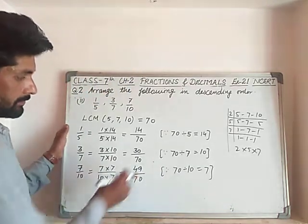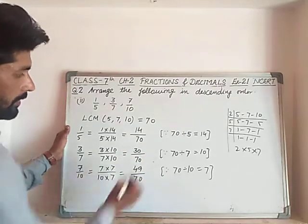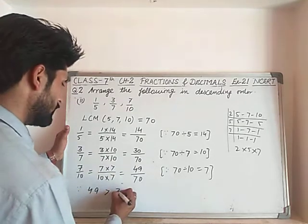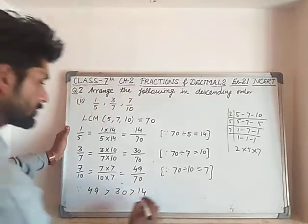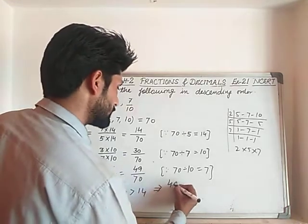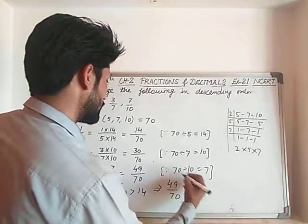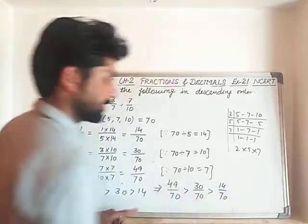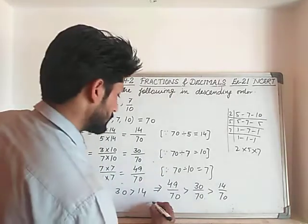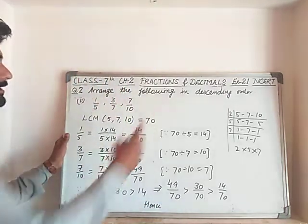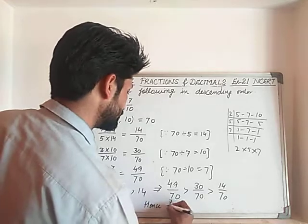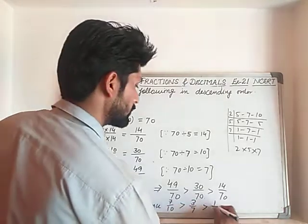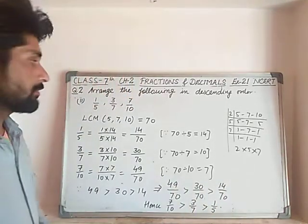Now it is very easy to compare since the denominator 70 is common. We compare the numerators: 49 is greater than 30 is greater than 14. This implies 49 upon 70 is greater than 30 upon 70 is greater than 14 upon 70. Hence, writing the original fractions, the required descending order is: 7 upon 10 greater than 3 upon 7 greater than 1 upon 5. That is the required descending order of the given fractions.